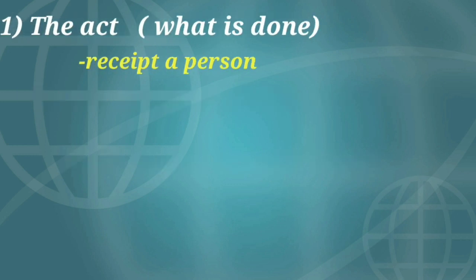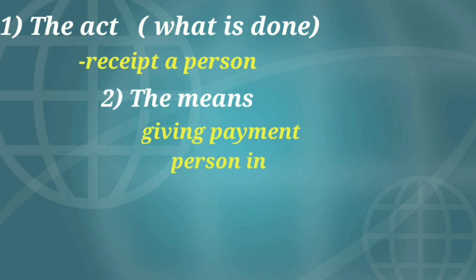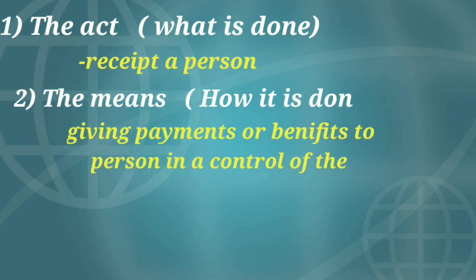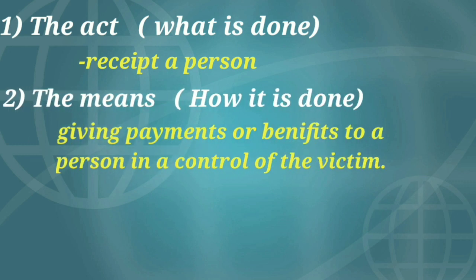The act involves receiving a person. Second, the means — how it is done. The means involves giving a payment or benefits to a person in control of the victim.